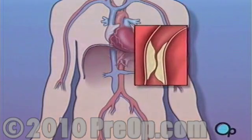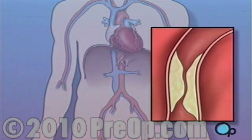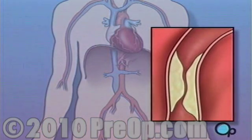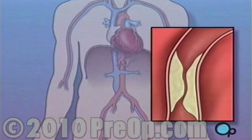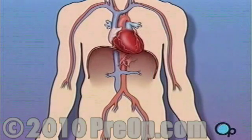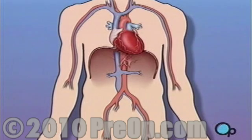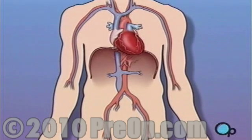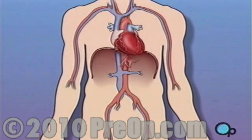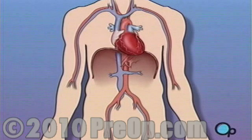Sometimes these blood vessels can narrow or become blocked by plaque deposits, restricting normal blood flow. In simple terms, a balloon angioplasty with stent insertion is a procedure used to increase the amount of blood flowing through the coronary artery.